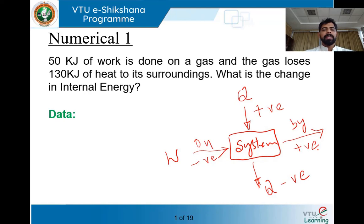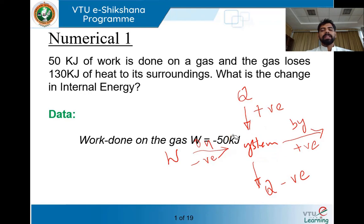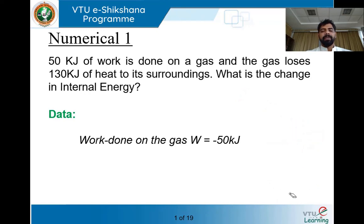Moving ahead with this problem: 50 kilojoules of work is done on the gas, meaning work is done onto the system, so it is taken as minus 50 kilojoules. The gas loses 130 kilojoules of heat, meaning it is being rejected by the system, so Q is also taken as minus 130 kilojoules.